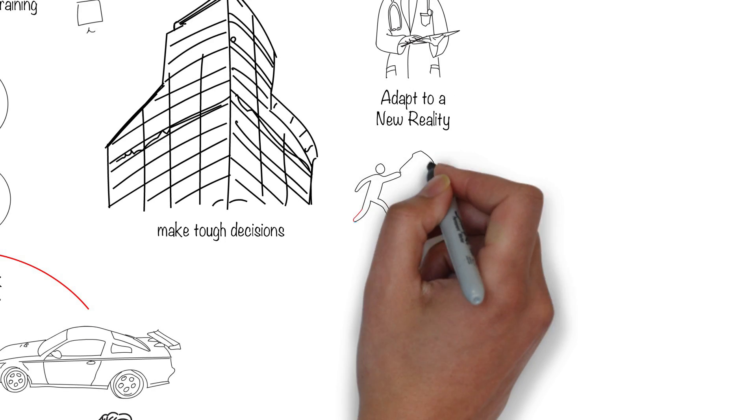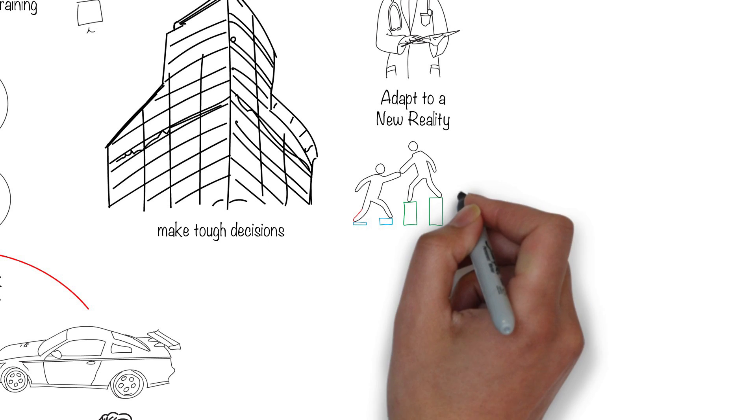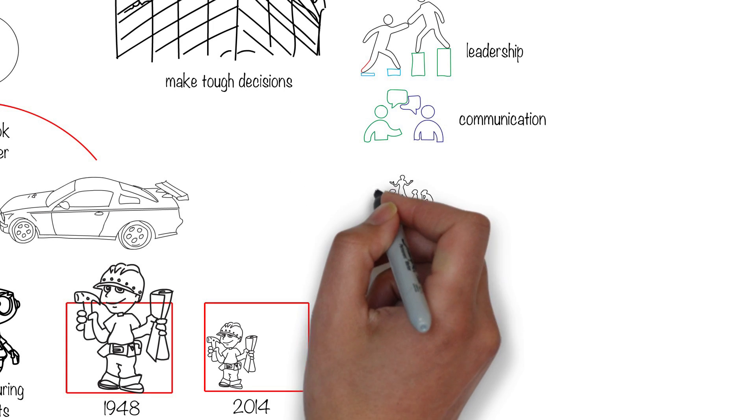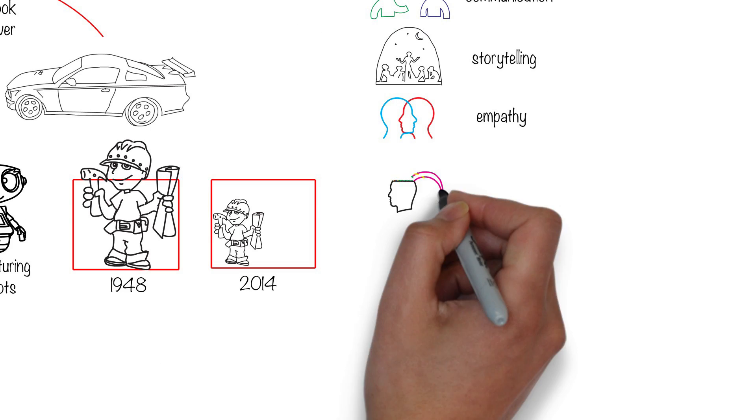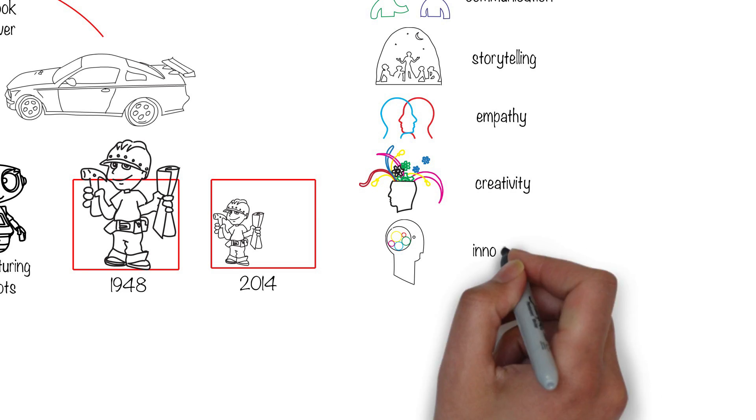To prepare for this future, we have to learn skills like leadership, communication, storytelling, empathy, creativity, and imagination. Leave the mundane to machines and automation. There's no future in that anymore.